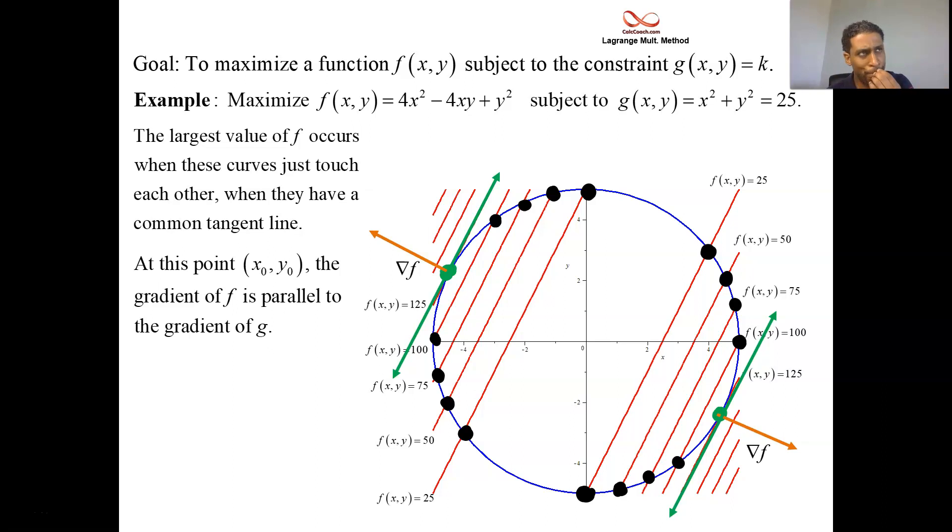And so the gradient of f and the gradient of g are parallel to each other. One of them, let's say the gradient of f, is a scalar multiple of the other. Orthogonal to tangent is normal, and normal is the direction of the gradient.